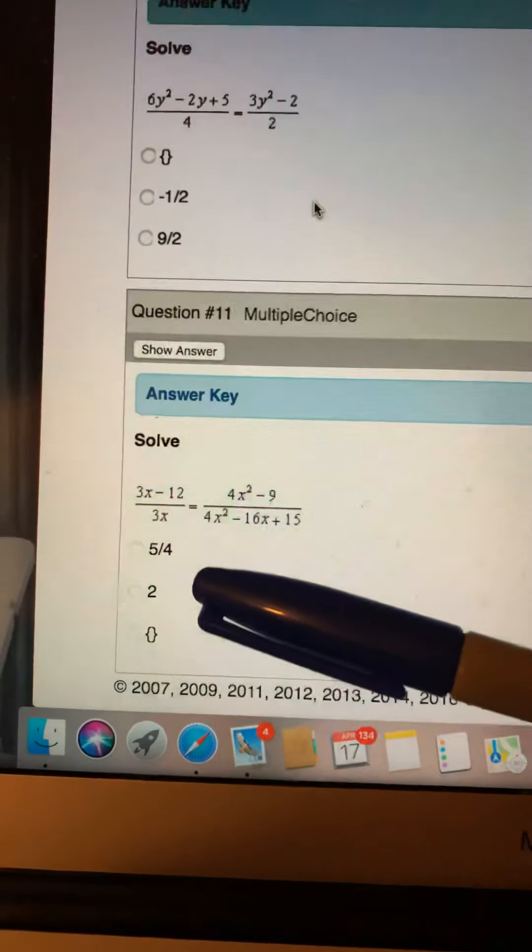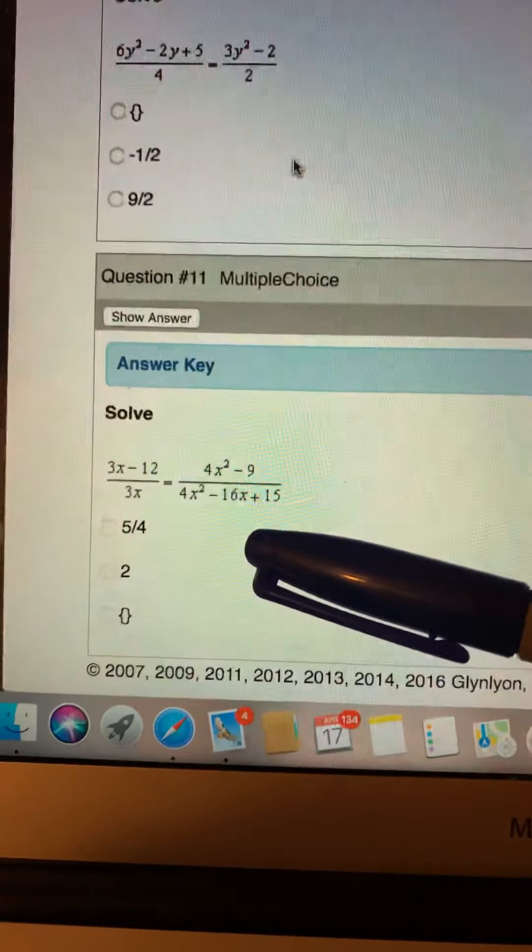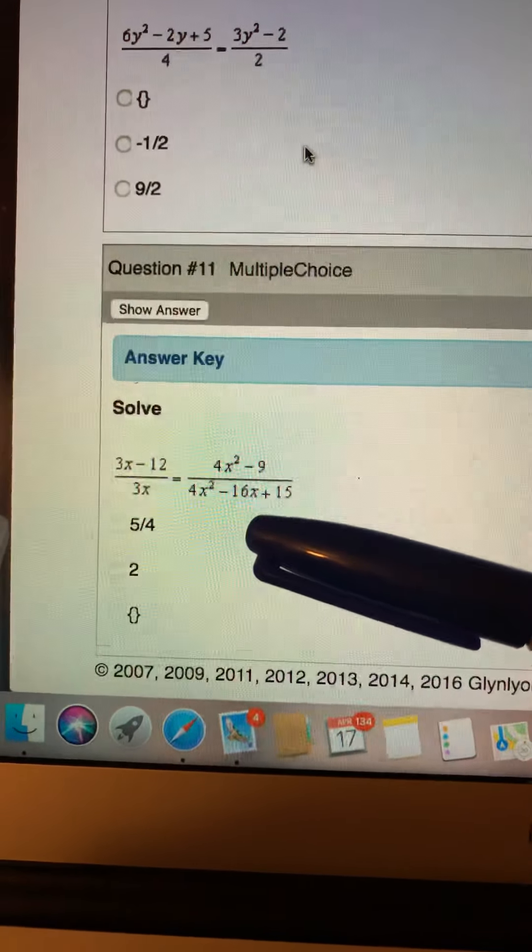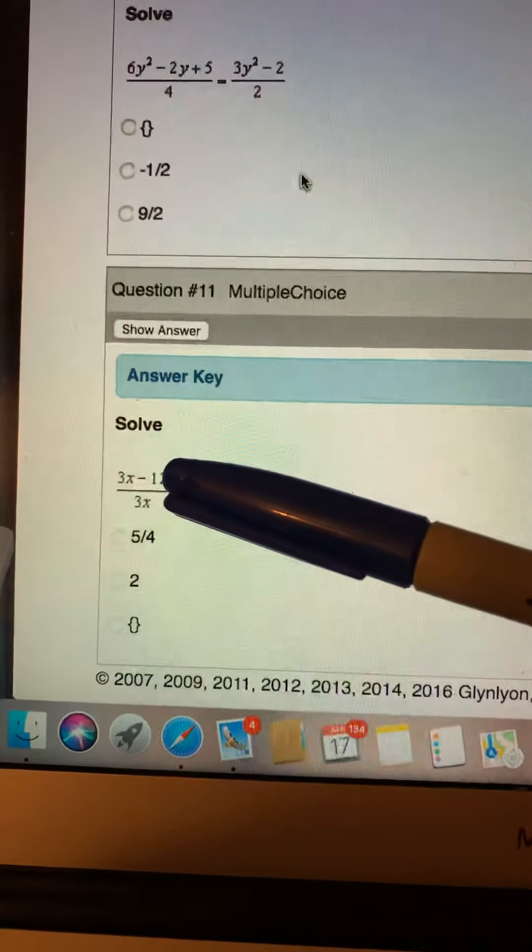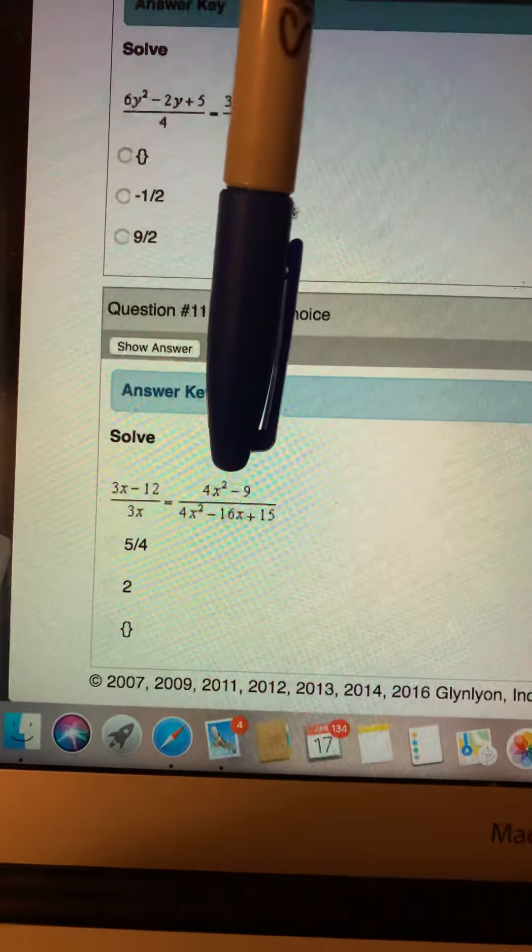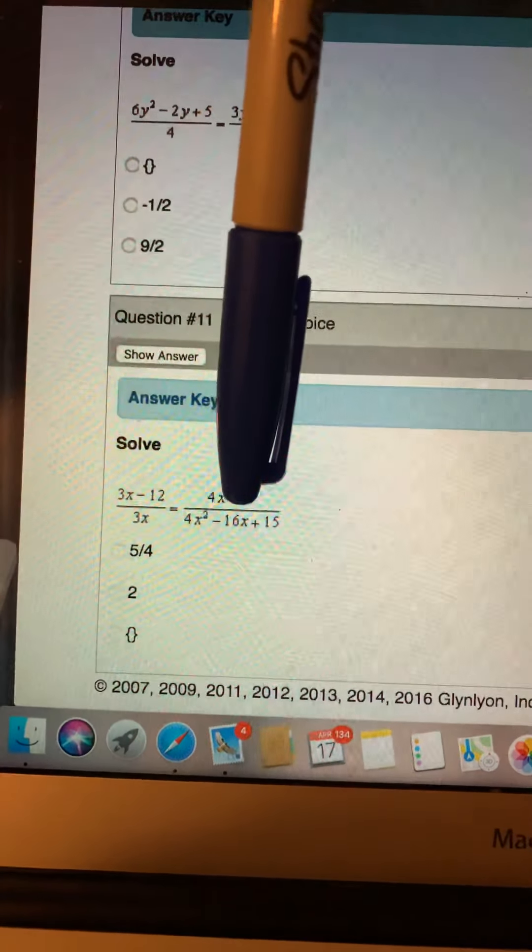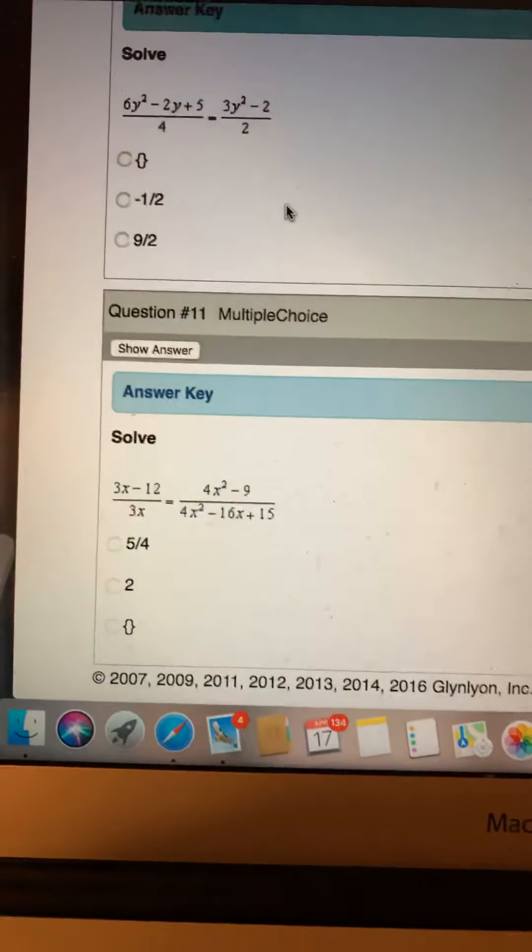So let me give you a little bit of guidance on this one. It's going to be helpful for you if you look at the 3x minus 12, the 4x squared minus 9, and the 4x squared minus 16x plus 15. Those can all be factored.